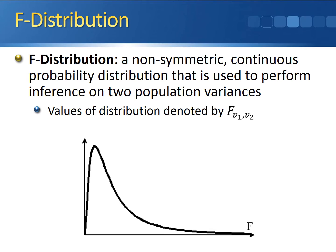The values of the distribution are denoted by the capital letter F with V1 and V2 in the subscript. V1 and V2 stand for the degrees of freedom.